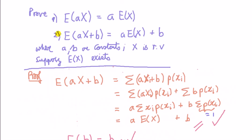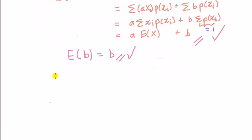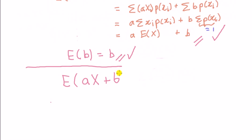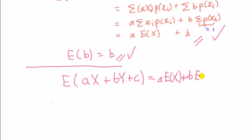This proof, in the second one — if we did this proof, we didn't have to prove the first one, because the proof of the first is contained in the proof of this. Just look below here. The next step, in this series of proofs, is to show that something like E(ax + by + c) is equal to a times expected value of x plus b times expected value of y plus c.